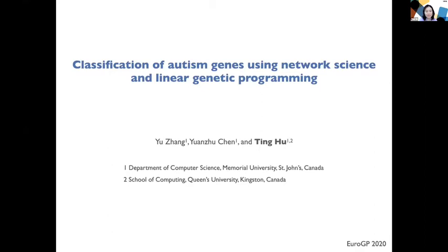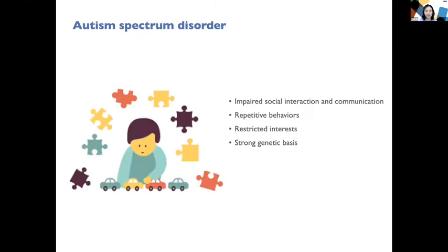Today I'm going to talk about this project, which is from my master's student Yuuzhan's thesis work. I'm an assistant professor at the Department of Computer Science and School of Computing at Queen's University in Canada. In this project, we use network science and genetic programming to identify potential genes associated with autism.